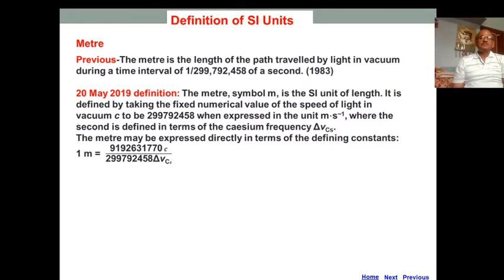The definition of some SI units has been changed. The reason is that certain physical quantity units should be based on universal constants which never change - they remain the same everywhere, every time. So a redefinition was given, expressed as the fixed numerical value of the speed of light in vacuum c to be 299,792,458 when expressed in the unit meter per second, where the second is defined in terms of cesium frequency. So, one meter is equal to this value.